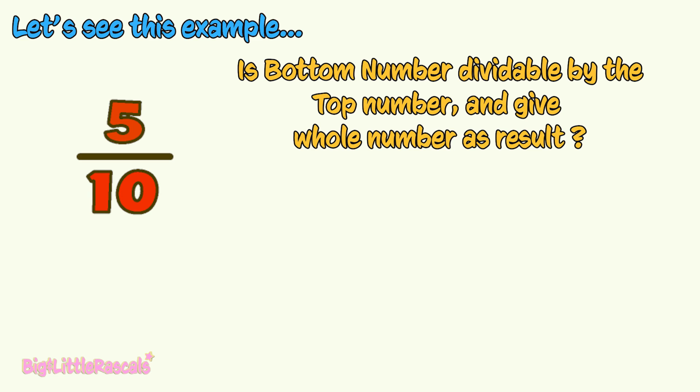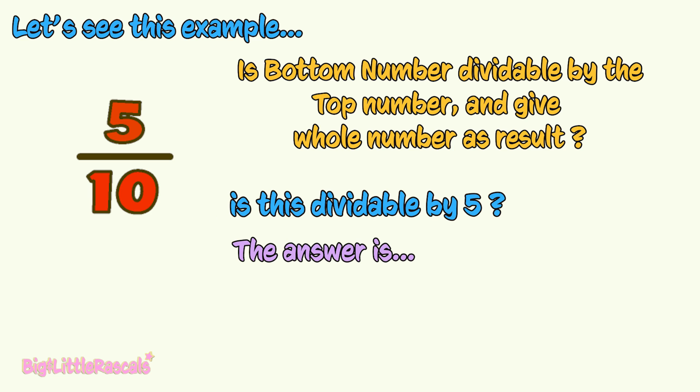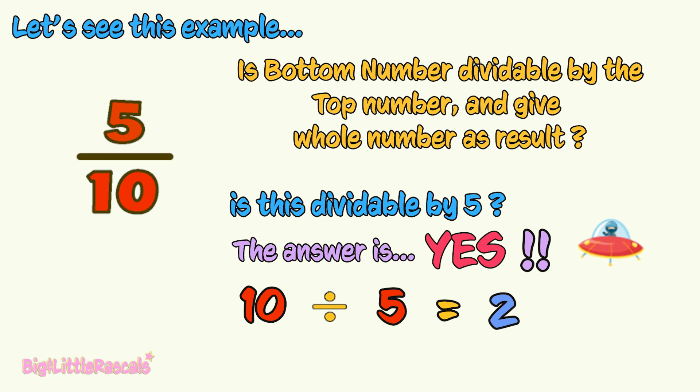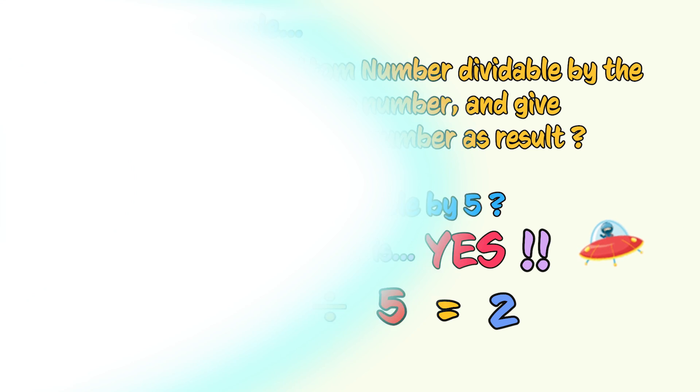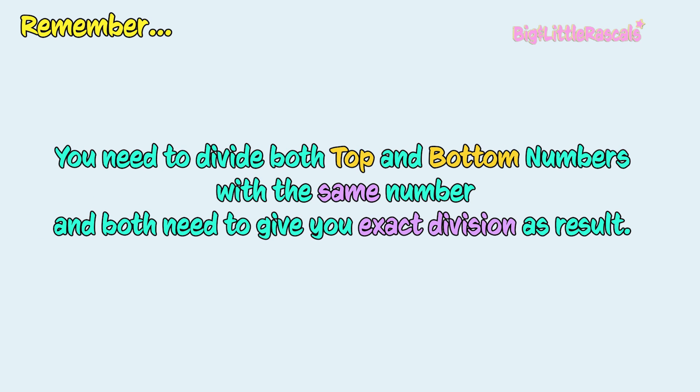Five-tenths. Let's first check if 10 is dividable by 5. The answer is yes! When you divide 10 with 5, it gives you result as 2, which is an exact division, because 5 is the factor for 10. To simplify a fraction, always remember, you need to divide both top and bottom number with the same number, and both need to give you an exact division as a result.